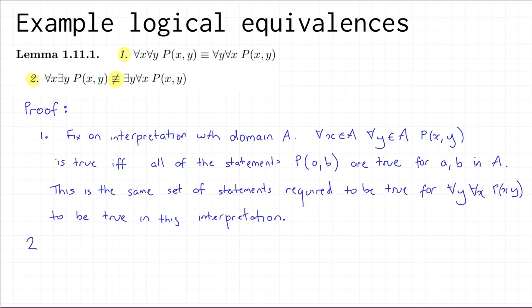We've actually already seen an example to show that those two formulas are not logically equivalent. To show that two formulas are not logically equivalent, you need an interpretation — any interpretation — in which the two formulas have different truth values. We actually saw such an example in the last video.